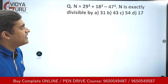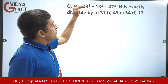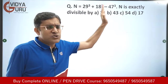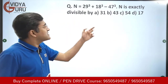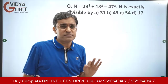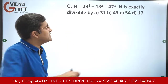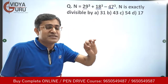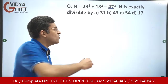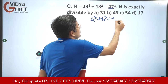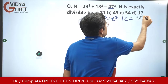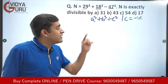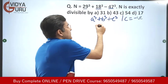Let's move to the next question — a different variety. We have n = 29³ + 18³ − 47³, and we need to find which of the given options n is exactly divisible by. Notice this is of the form a³ + b³ + c³ where c = −47 has a negative value.